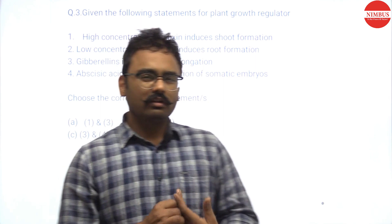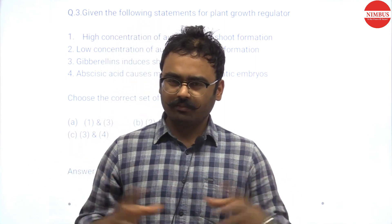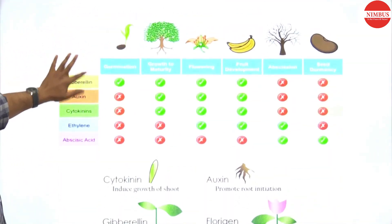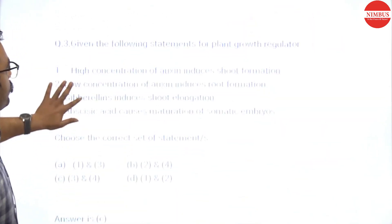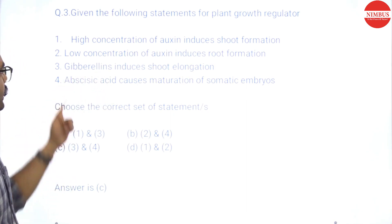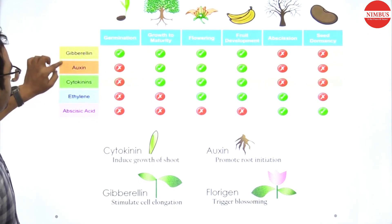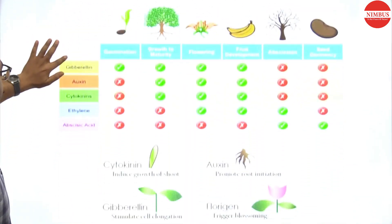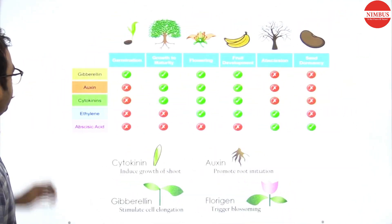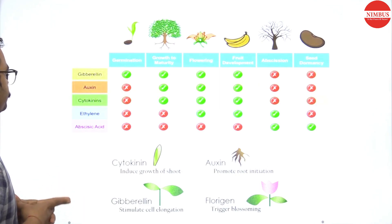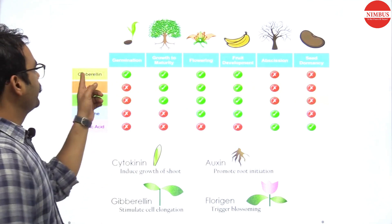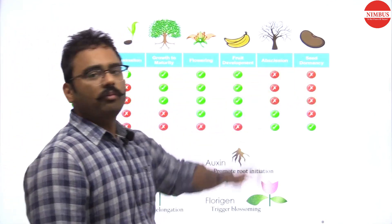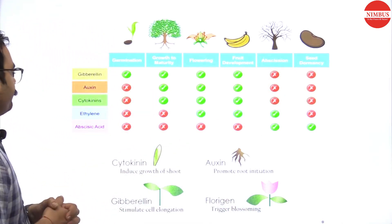The third question is about plant growth regulators and their functions. You need to learn functions of auxin, gibberellins, abscisic acid, ethylene, and cytokinin. For example, gibberellins help in germination, are responsible for growth to maturity, flowering, fruit development, but not seed dormancy.